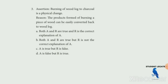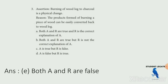Assertion: the burning of wood log to charcoal is a physical change. If you consider carbon dioxide, heat, and charcoal produced, the decision is wrong. The reason — that the products formed by burning a piece of wood can easily convert back — is also false. So option C is correct.